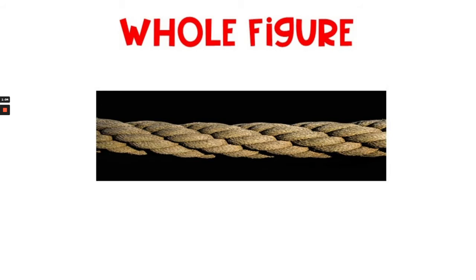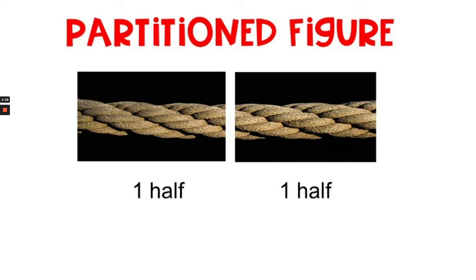This rope represents a whole figure. If we snipped the rope in the very middle, we would create two equal halves. Each part is one half.